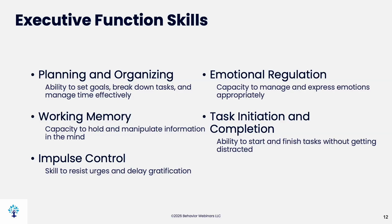Executive functioning skills include planning and organizing — the ability to set goals, manage tasks, and manage time effectively — working memory, the capacity to hold and manipulate information in the mind, impulse control skills to reduce urges and delay gratification, emotional regulation to manage and express emotions appropriately, and task initiation and completion — the ability to start and finish tasks without getting distracted. These are super important skills, and we're learning more about them all the time because they touch on most things people do for the rest of their lives.